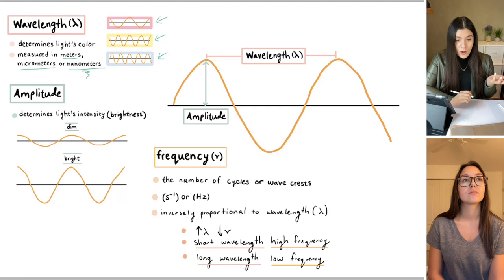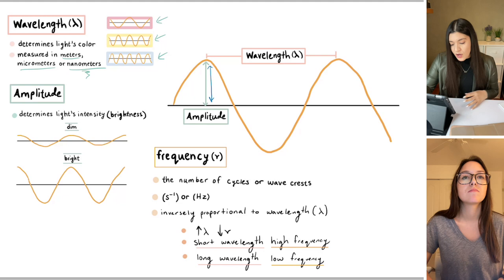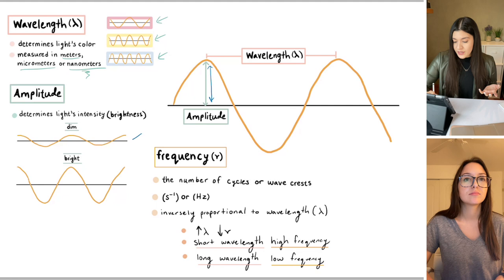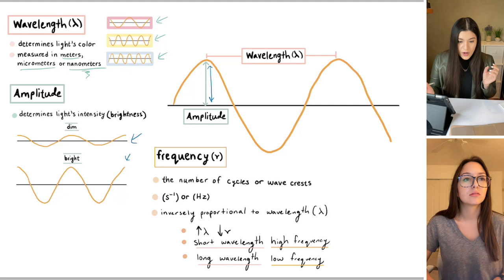Next is the amplitude. It's pretty much just talking about how high that wave would be. Specifically it's going to talk about the brightness of the light, so how intense is that light. If I were to look at this one, this is completely stretched out, that wave is stretched out, then I know it's going to be more dim. If I were to compress it a little bit more it's going to be brighter.